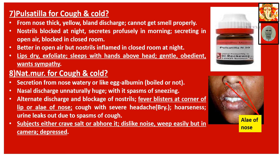Natrum Muriaticum for cough and cold: secretion from the nose watery or like egg albumin — like boiled egg or raw. Nasal discharge unusually large with spasms of sneezing. Alternate discharge and blockage of nostrils. Fever blisters at the corner of the lips or alae nasi — the side portions of the nose are called alae. Cough with severe headache — we get this in Bryonia also. Hoarseness. Urine leaks out due to spasms of cough. Subjects either crave salt or abhor it. Dislike noise. Weep easily but in private and are depressed. These are general symptoms of Natrum Muriaticum.